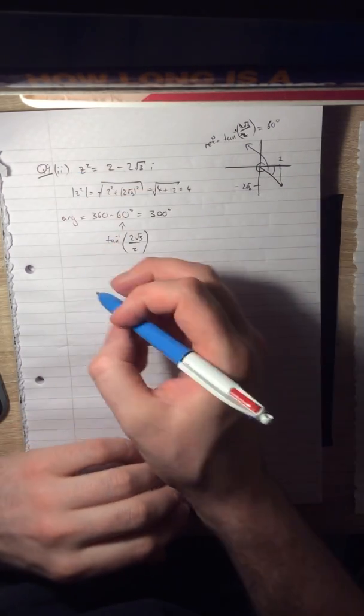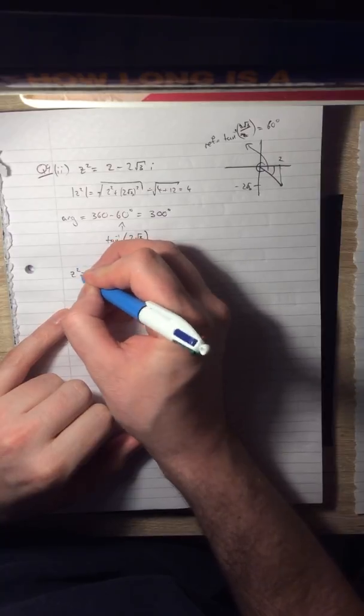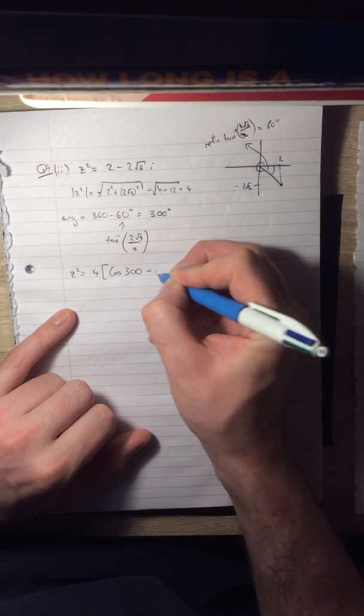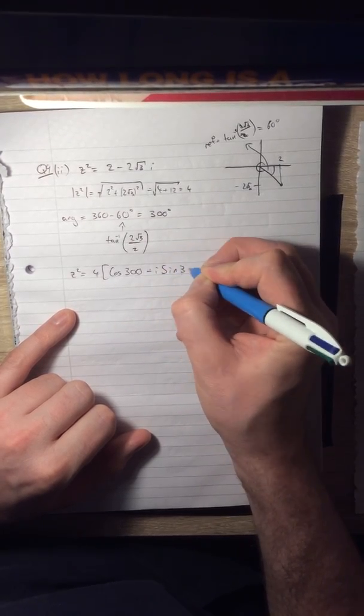So this number, z², in polar form, is going to be 4 cos 300 + i sin 300.